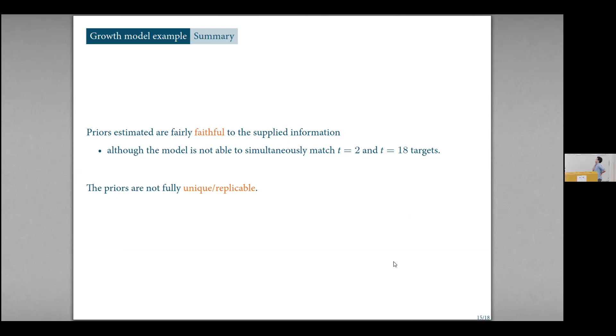So in summary, for the growth model, the priors that we estimate using this approach are fairly faithful to the information we supplied, although we're not actually able to match all aspects of the target where we've got four different targets at both the very young children and the very old children. And so that perhaps reflects a lack of flexibility in the model, which is in some ways an interesting insight into this model, I think. And then secondly, it's fairly clear our priors aren't fully unique or replicable. Unpicking which of those two it is, is not so easy, right? What's just, what's the weaknesses of our algorithm and what's the fundamental lack of uniqueness? It's not so clear exactly what the problem is.